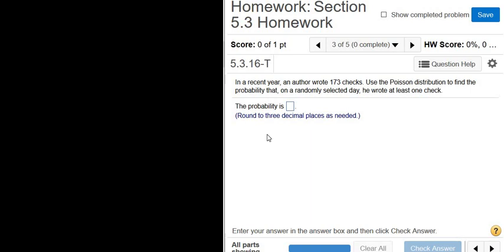In a recent year, an author wrote 173 checks. Use the Poisson distribution to find the probability that, on a randomly selected day, he wrote at least one check.